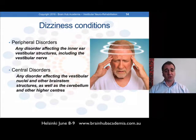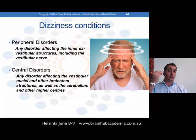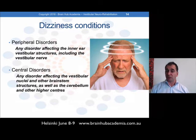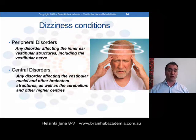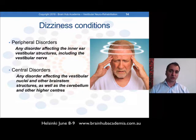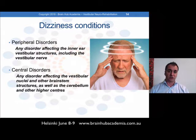We'll discuss the difference between a peripheral disorder — involving the inner ear and nerve — versus central disorders affecting the brainstem, cortical areas, and so on. We'll look at medication and its influences on conditions, and go through conditions like Meniere's, vestibular migraine, neuritis, and labyrinthitis, amongst many others. You may or may not come across all of these in your practice, but at least you'll be up to date with what they mean and what to do with them.